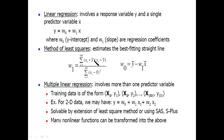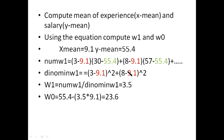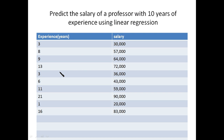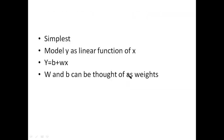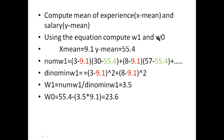We divide the mean by x and y to calculate w1, then use w1 into x-mean to calculate w0. The sum of x divided by total number of samples gives x-mean. If y is our salary, the sum divided by total number of samples gives y-mean. If x-mean is 4.1, y-mean is 55.4.